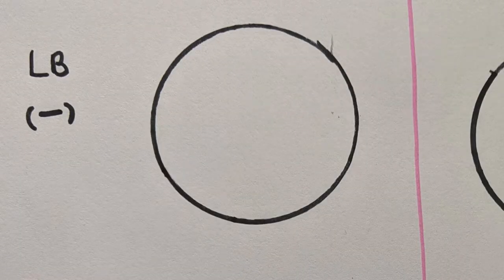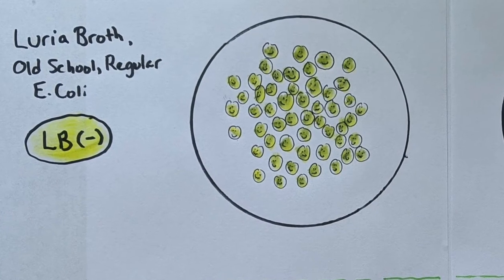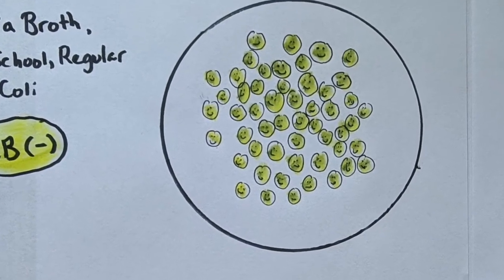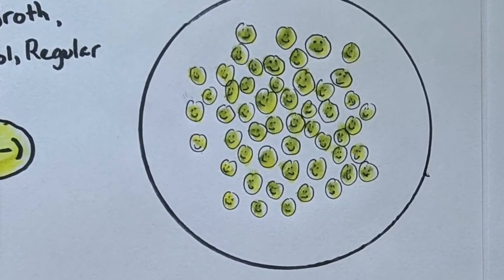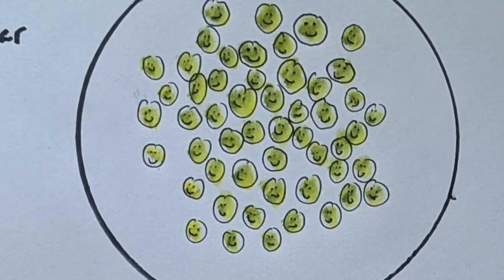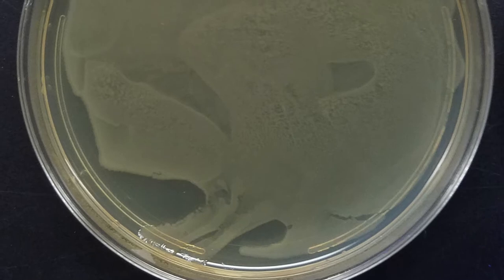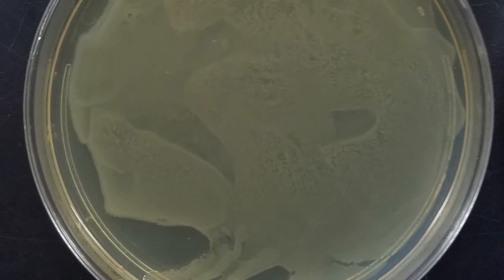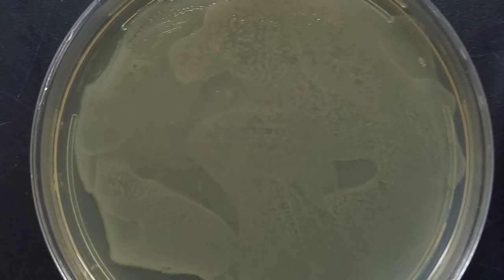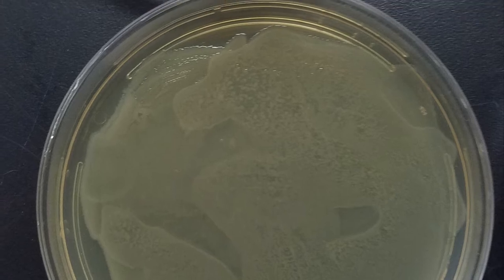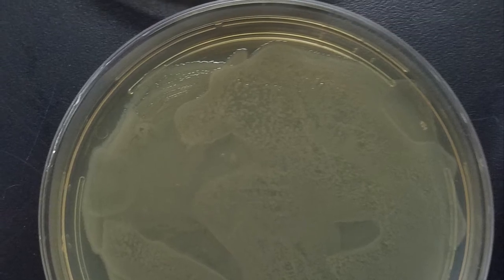Welcome back. Hopefully you've got your predictions written down. LB minus — wild type bacteria on regular nutrition broth — that's going to be party time. Those bacteria are going to do very, very well. Every bacteria is going to reproduce many times by binary fission and those many bacteria are going to cover the plate. We call that a lawn — you can't distinguish individual colonies. It's one big bacteria party.